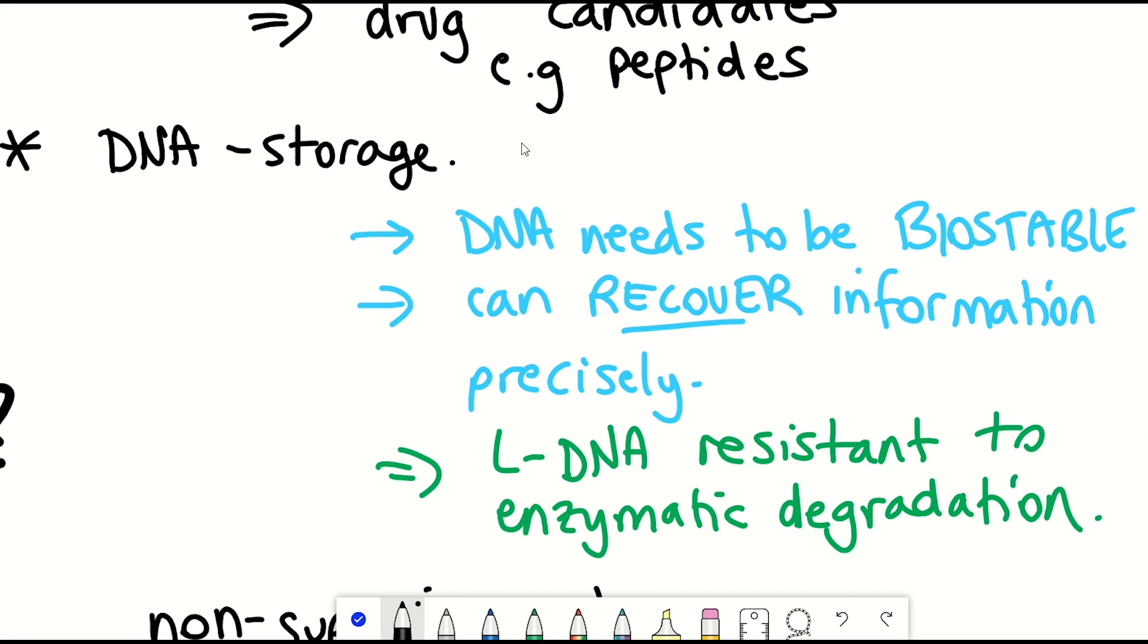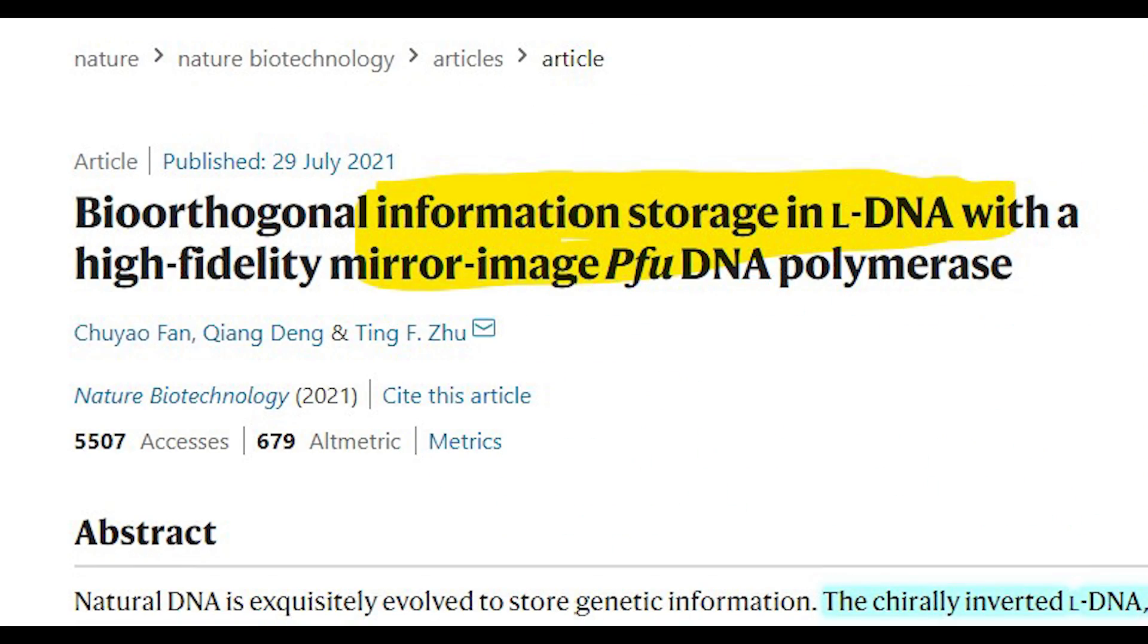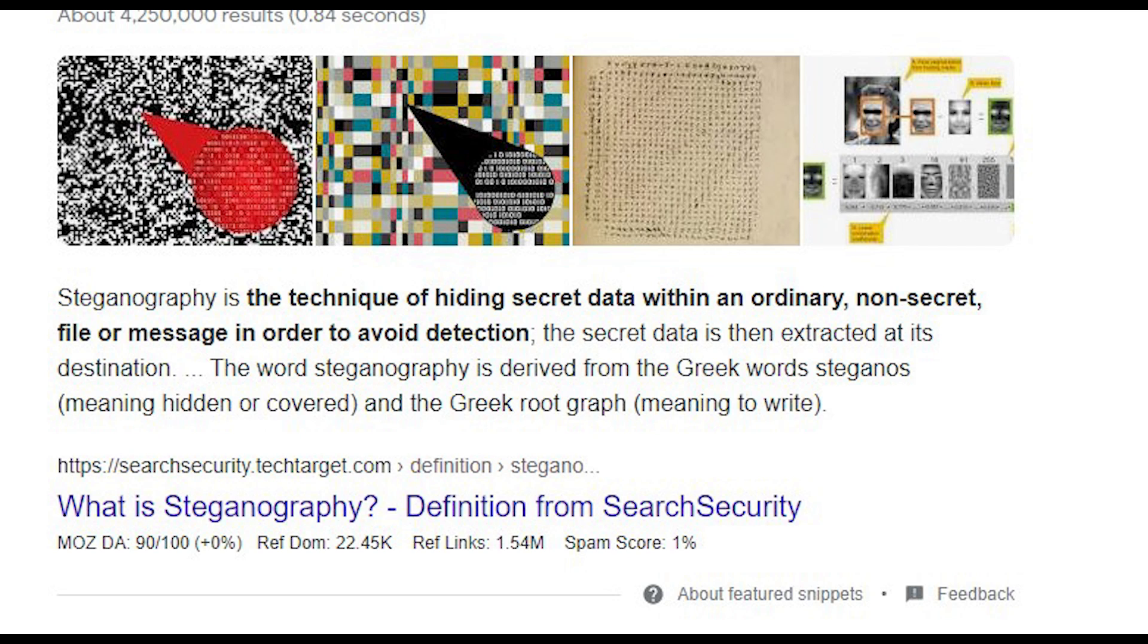But another interesting application they show, I think here just a bit for fun, is the idea that L-DNA could also be used for steganography. Now, this was actually my favorite bit of the paper. And so steganography is a way of hiding messages in plain sight. In fact, I can demonstrate this because I actually put a hidden message in this video, whereby earlier on in the video, I said, because I don't want to lose you now.